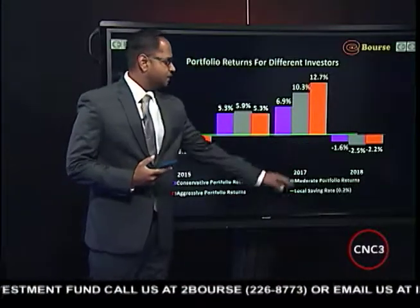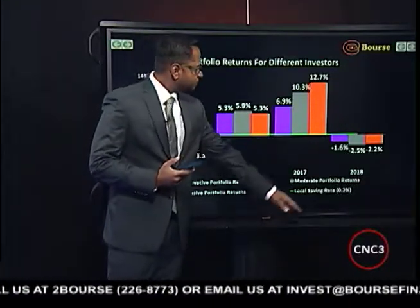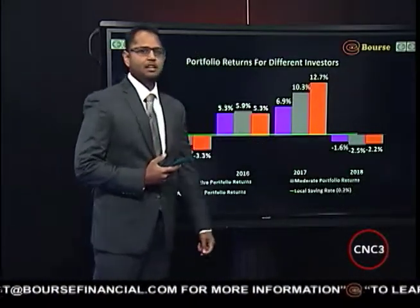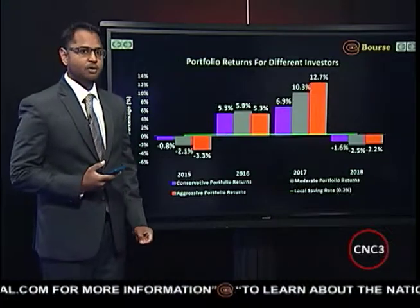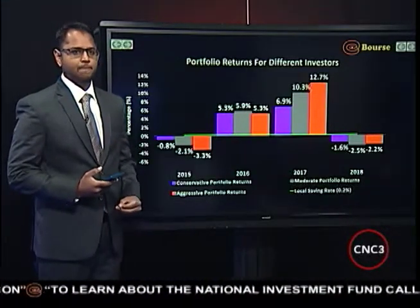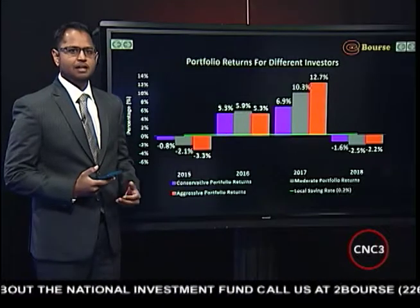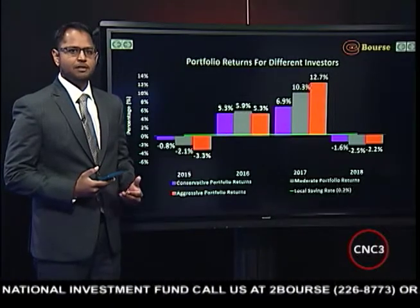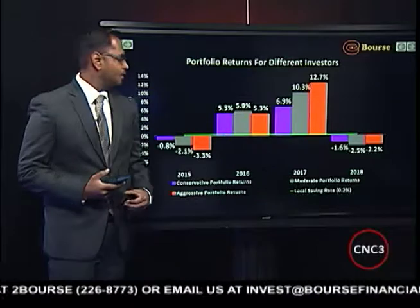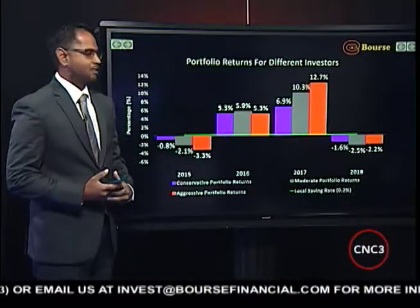The conservative investor's portfolio in purple would have returned negative 1.6%. The moderate portfolio in gray, just around negative 2.5%. And the aggressive investor, just around negative 2.2% in 2018 thus far. This, of course, reflects the very lackluster performance of international and regional bond and stock markets overall, which we would have discussed previously.